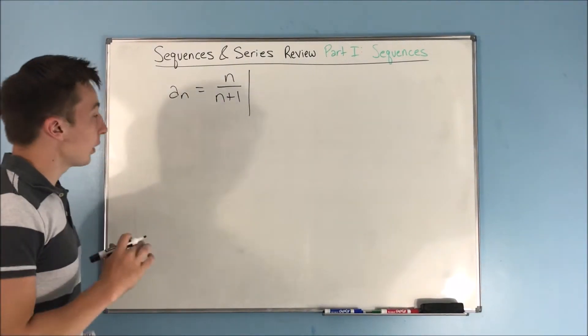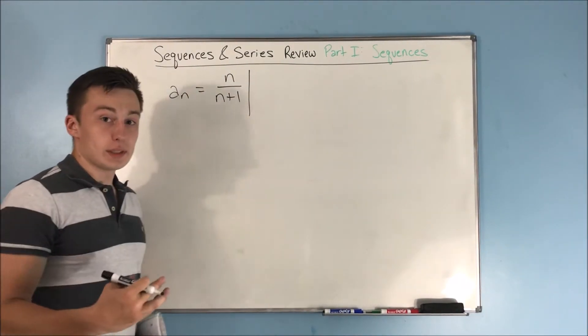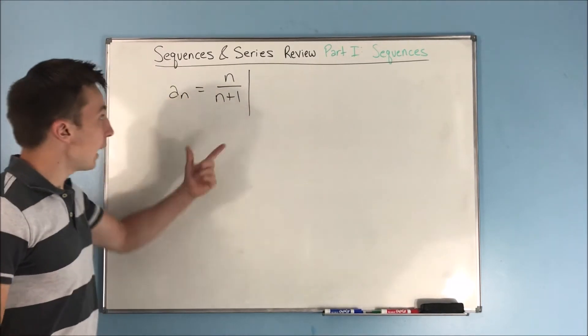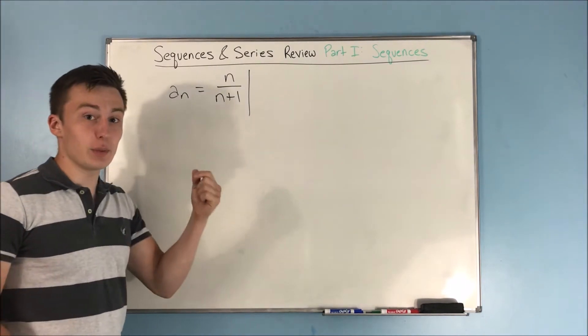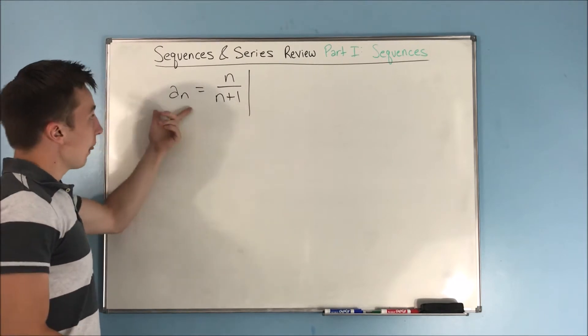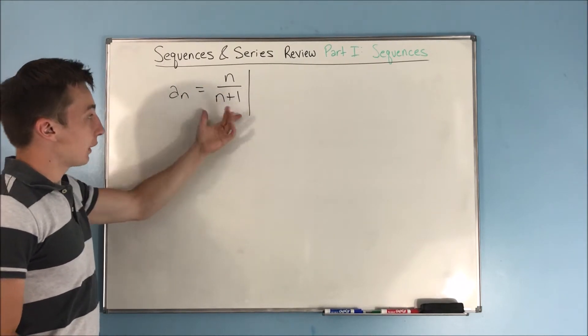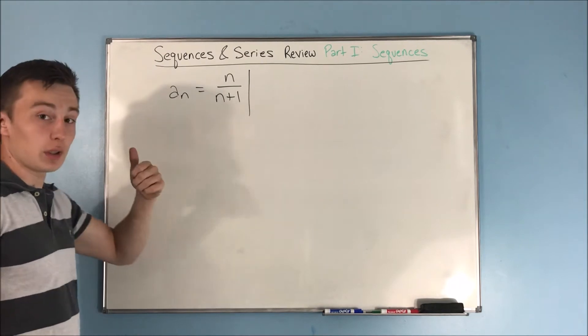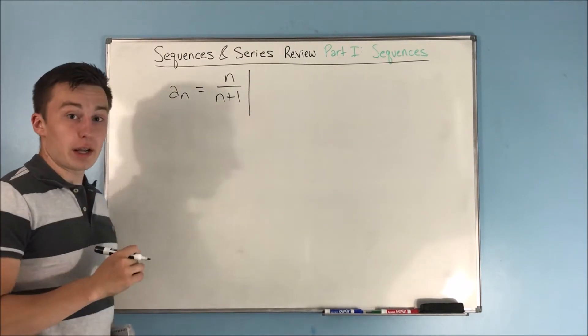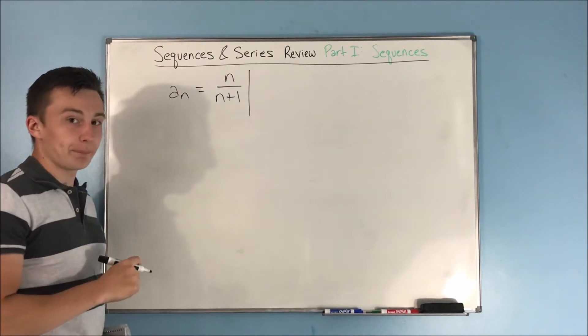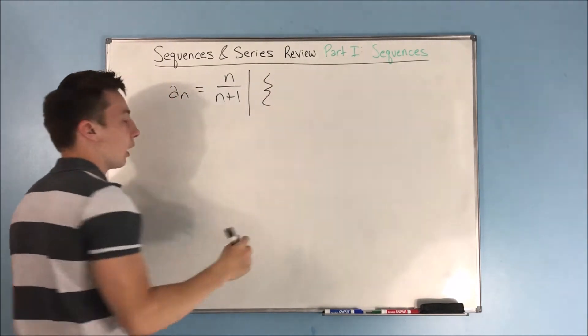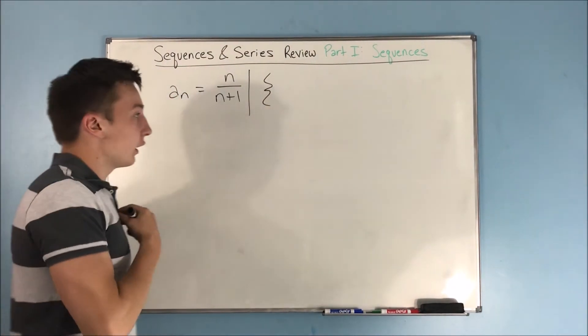Now we can write a formula for a sequence. You are seeing a written out sequence right down below. But we can compact this by just making a formula for the sequence. And that's that a sub n, which is just some term, is equal to n over n plus 1. You can plug in different n's to find different terms.